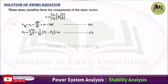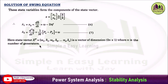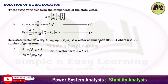Therefore, x1-dot equals x2, which is the first derivative of x1: d-delta/dt equals omega minus 2-pi-f, which is equation 6. Similarly, x2-dot equals d²delta/dt², which by differentiating equation 6 gives omega-dot, and from the swing equation d²delta/dt² equals 1/M times (Ps minus Pp), giving equation 7. The state vector x-transpose equals [omega-1, delta-1, omega-2, delta-2, ... omega-n, delta-n], a vector of dimension 2n cross 1, where n is the number of generators. Therefore x1-dot is a function of x1 and x2, and x2-dot is also a function of x1 and x2. In general, in vector form, x-dot equals f(x), which is the main objective.